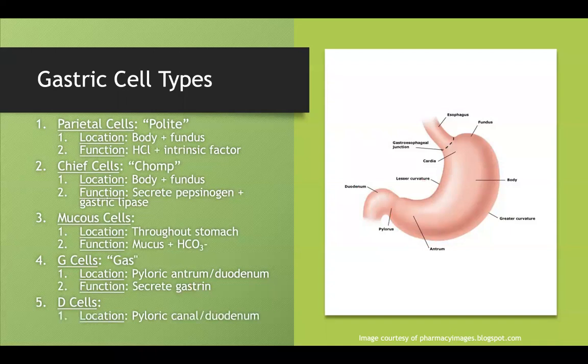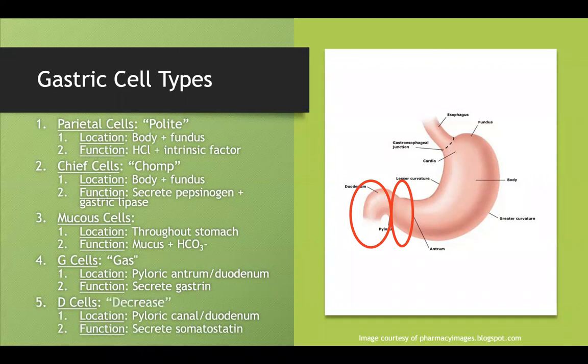D cells are located in the pyloric canal and throughout the duodenum. They secrete somatostatin — I remember it as 'somatostopin' because it turns off everything. I call D cells our 'decreased cells' because they produce the hormone that shuts every other hormone down.